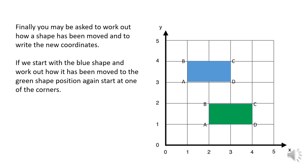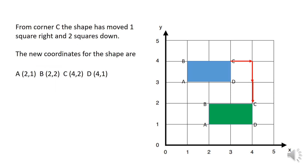Finally, you may be asked to work out how a shape has been moved and write the new coordinates. Starting with the blue shape, we need to work out how the green shape has moved. I'd recommend starting from a corner — I'll start at C. To get from C on the blue shape to C on the green shape, the shape has moved one to the right and two down. The new coordinates are: A at (2, 1), B at (2, 2), C at (4, 2), and D at (4, 1).